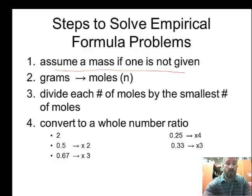If you have a number like 2, that's already a whole number, so you're set. If you have a number that ends in .5, you'd multiply it by 2 to get a whole number. If you have a number that ends in .67, you'd multiply it by 3 to get a whole number. .25, you'd multiply it by 4 to get a whole number. And .33, you'd multiply it by 3. So let's use this information to try and solve a problem.